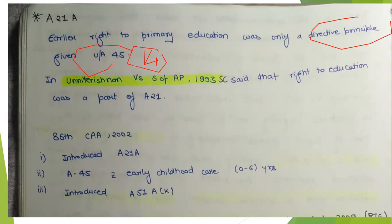Then the Supreme Court took up a case named Unnikrishnan versus State of Andhra Pradesh, 1993. The Supreme Court ruled that the right to primary education is available as a fundamental right under Article 21 of the Constitution.